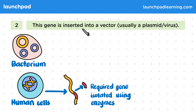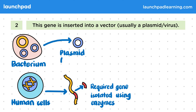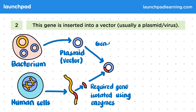Step two: this gene is inserted into a vector, usually a plasmid or virus. Remember that a plasmid is a circular loop of DNA which has been removed from this bacterium. This plasmid is a vector because it's a structure that carries or conveys another structure — in this case a desired gene will be carried by the plasmid. So our required gene, shown in red here, is going to be inserted into this plasmid. You can see now that the plasmid is made up of the bacterium DNA with the required gene inserted into it.